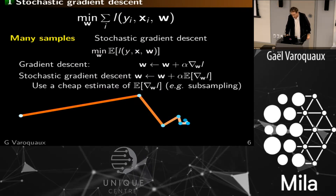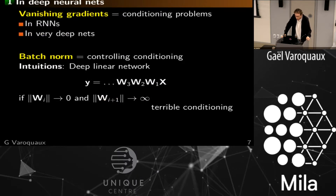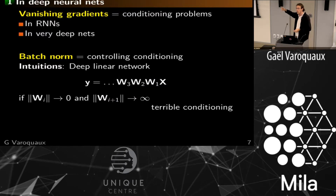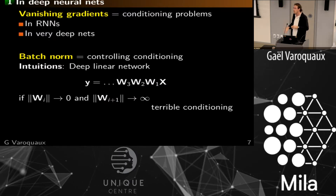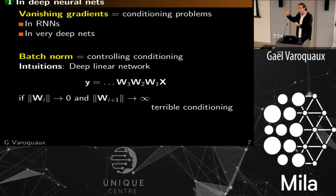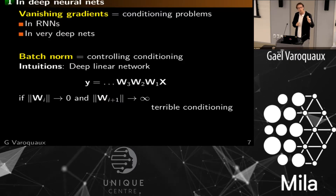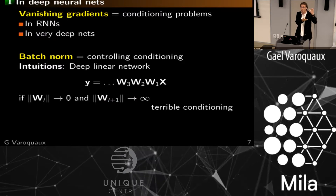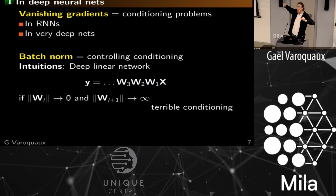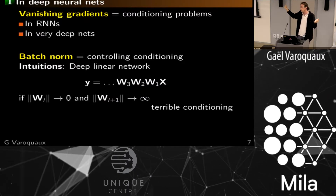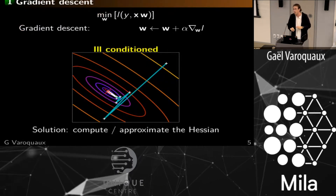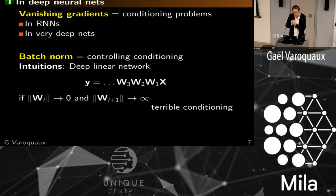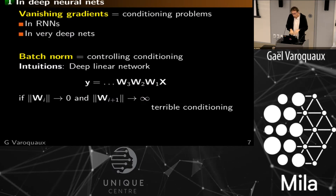Stochastic gradient descent is the workhorse of deep learning these days. One well-known challenge is vanishing gradients — in recurrent neural networks and very deep networks, you're propagating information across many layers, and if those layers are not well conditioned, information just vanishes. This is a conditioning problem: in a very deep net, the modification needed at the bottom entrance layer may have a very different scale than what's needed at the output to achieve the same delta. Extremely different scalings means conditioning problems.